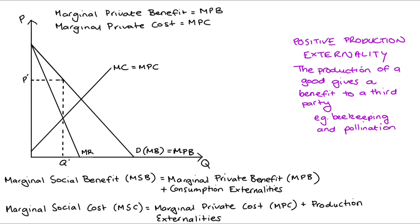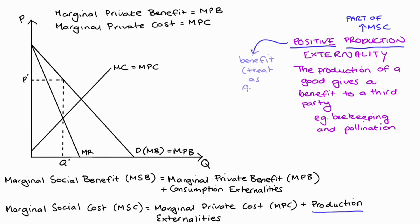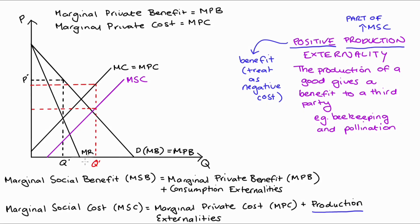Now our positive production externality will be part of our marginal social cost function because it's a production externality. Because it's a positive production externality — so there's some benefit afforded to a third party — I'm going to treat it like a negative cost in our cost function. This actually means that when I draw my marginal social cost curve on my diagram it's going to lie below our marginal private cost curve. So for some marginal unit, say the production of the Q' unit, we read up the private cost borne by the seller from our marginal private cost curve. The marginal social cost is beneath there, read off our marginal social cost curve, and the gap between them is the value of the external benefit associated with the production of that particular unit Q'.